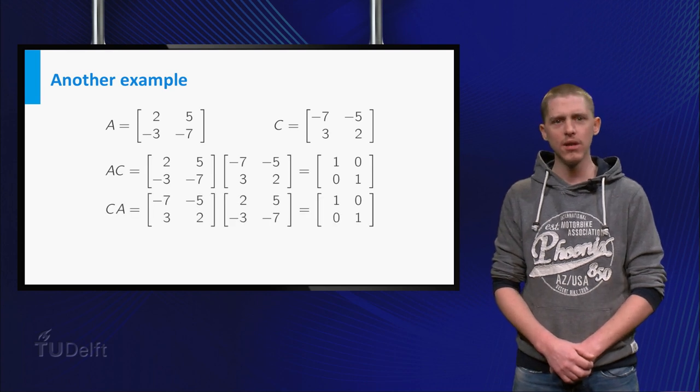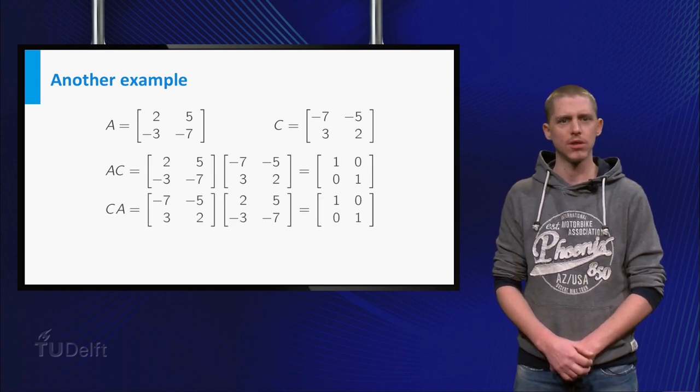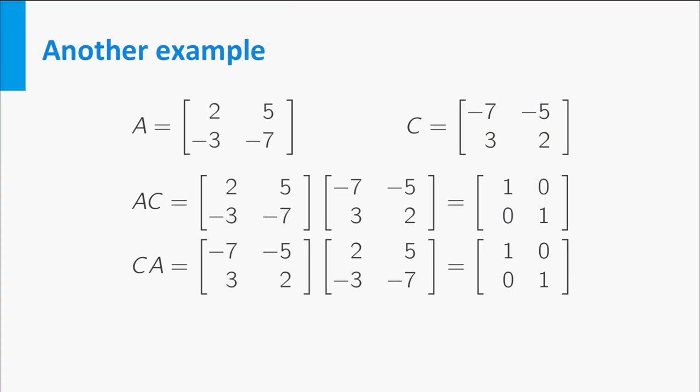Calculating C times A again gives us the identity matrix. So according to the definition of the inverse, A is invertible and the inverse of A is C.